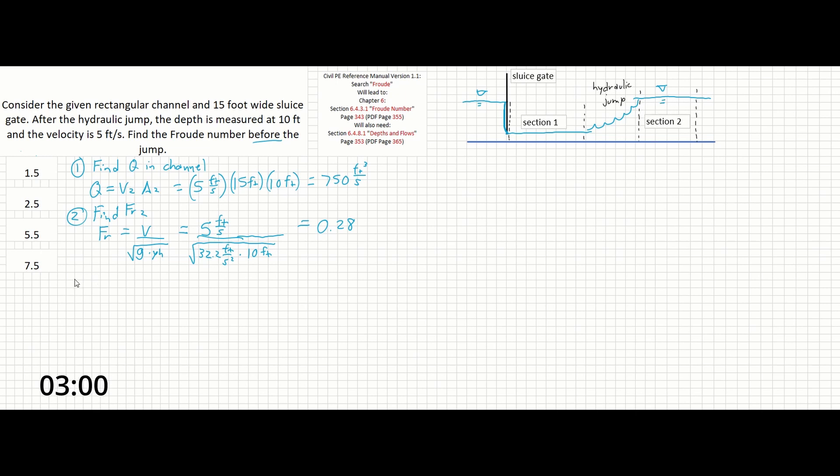Moving on to step 3. We're going to find the depth in section 1 using the values found for section 2. This equation will come from a group of equations on page 353. Find Y₁.